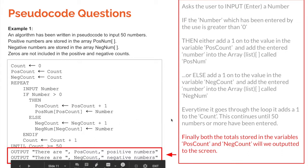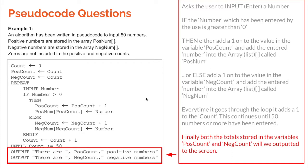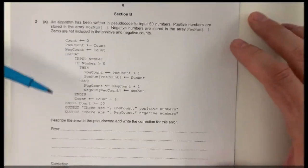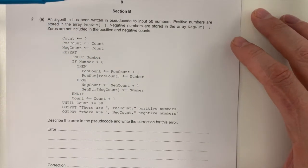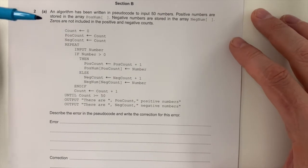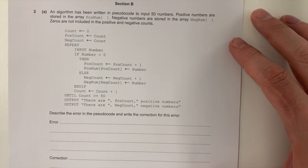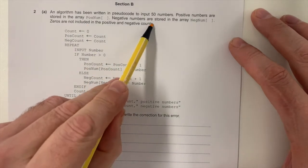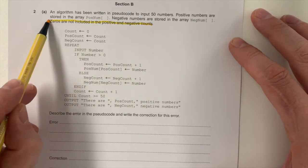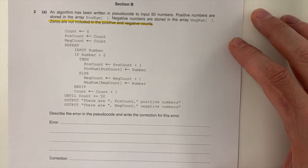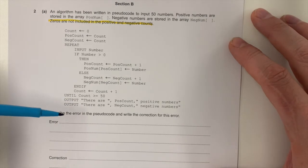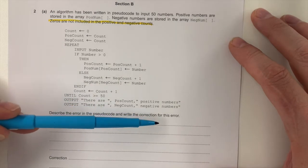So what I'm going to do now is get the exam paper and see how best to get these eight marks. The important bit to highlight is this: the zeros are not included. We've been through the code. The question says: describe the error in the pseudocode and write the correction for this error.